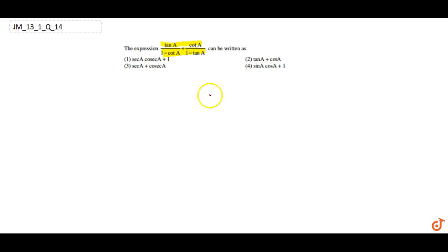For this question we are going to use some properties. First property is tan A into cot A is equals to 1. We have to use here cosec square A minus cot square A equals 1.